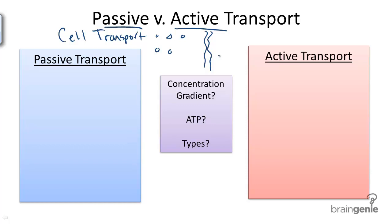Let's talk about passive transport first and compare it to active transport. In passive transport, when there is a concentration gradient — meaning there are more solutes on one side of a membrane than on the other — we move from an area of high concentration to an area of low concentration. This means we are going down the concentration gradient.